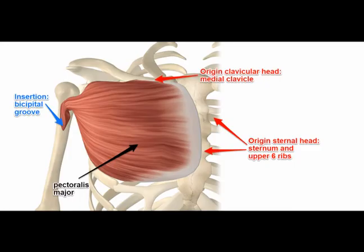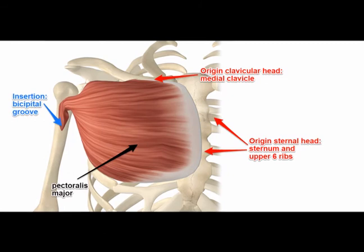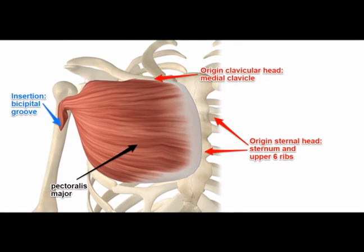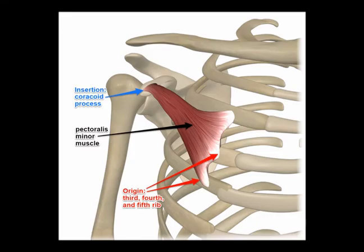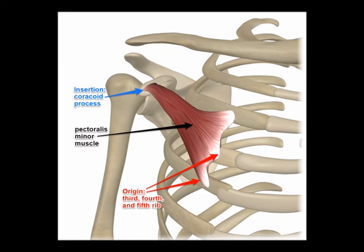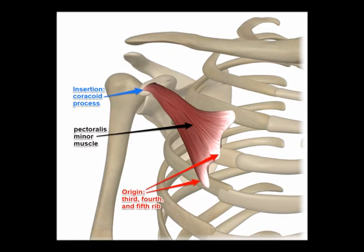Downward rotation of the scapula is caused by a concentric contraction of the latissimus dorsi muscle, the levator scapula, the rhomboid major and rhomboid minor, and the pectoralis major and the pectoralis minor muscles.